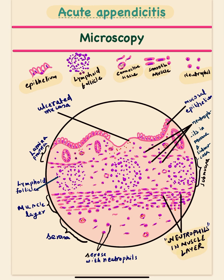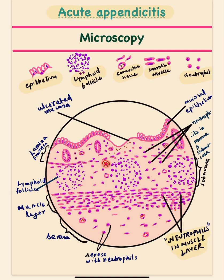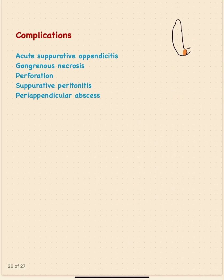In the diagram for acute appendicitis, the outermost layer showing mucosal lining epithelium with ulceration is drawn first. Then the lamina propria with glands and congested blood vessels, followed by the submucosa with hyperplastic lymphoid follicles, then the muscle layer with small muscle cells infiltrated by neutrophils, and lastly the serosa with congested blood vessels and fibrovascular connective tissue. Neutrophils are drawn in all layers. A separate video on detailed microscopy will be uploaded.